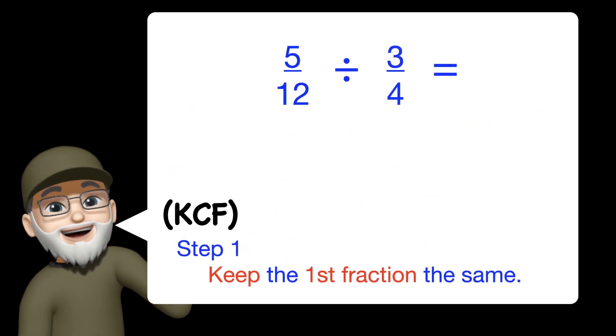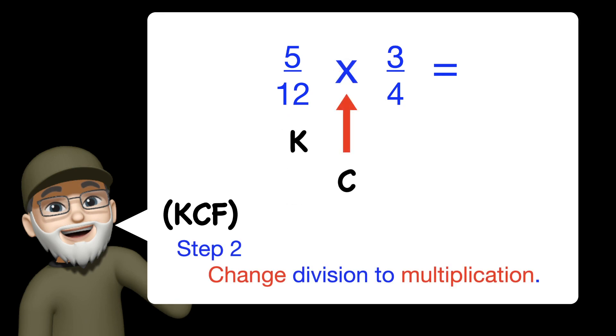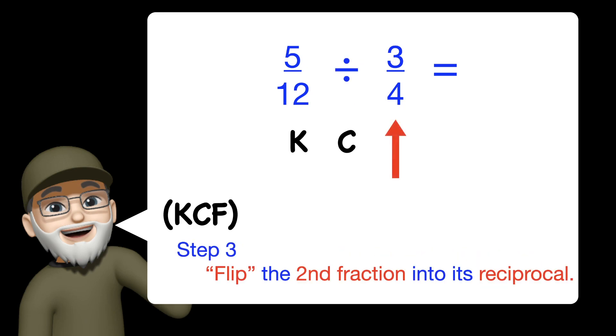Okay, let's go ahead and walk through the steps together of the same problem. So 5 twelfths divided by 3 fourths. Step 1 is that we keep the first fraction the same. Step 2 is we change division into multiplication. Step 3 is that we flip the second fraction into its reciprocal.